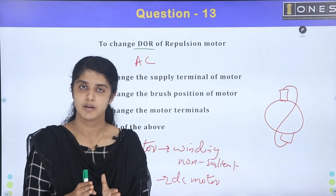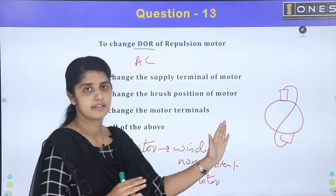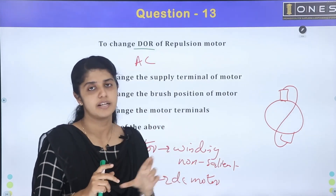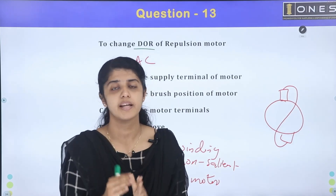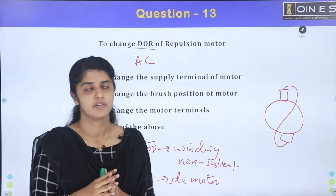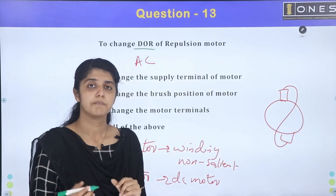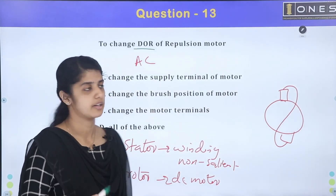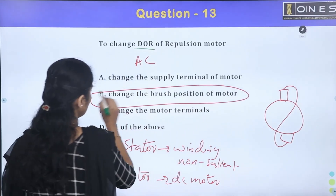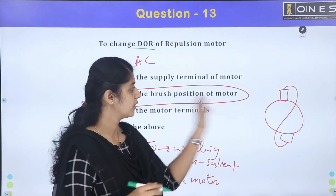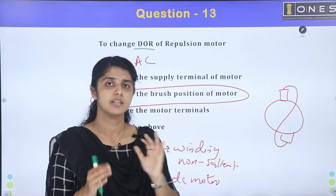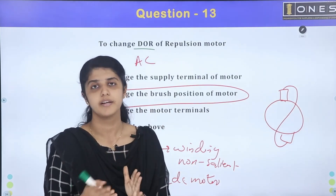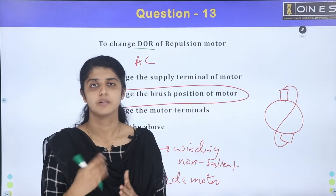To develop electromagnetic torque, there is a small angular displacement between the brush axis and the stator field axis. To change the direction of rotation of the repulsion motor, you change the brush position — shift the brush displacement angle to the other side.